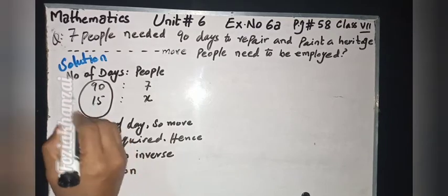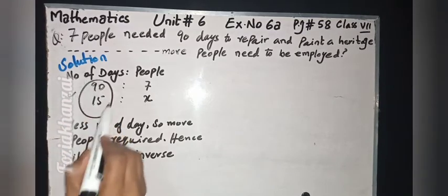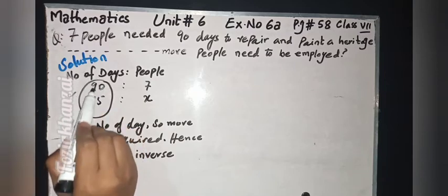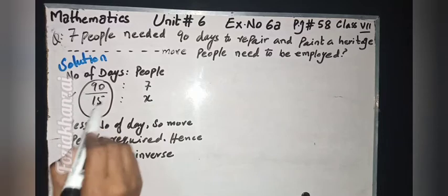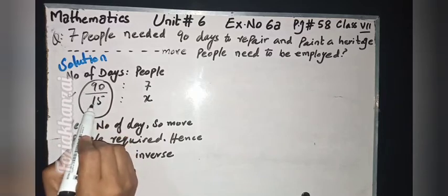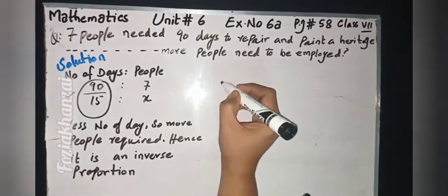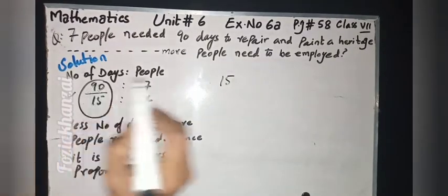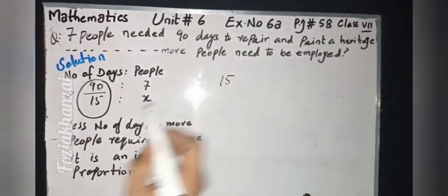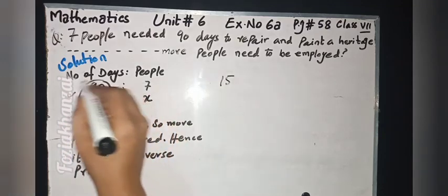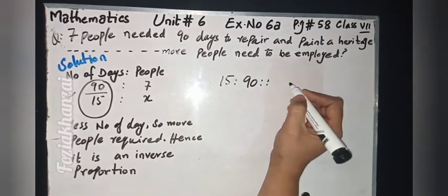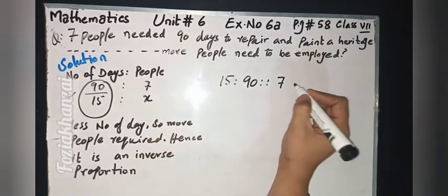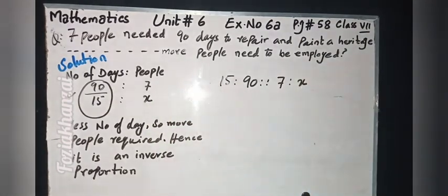In inverse proportion, we reciprocally write only the days part. In fraction form it is 90 upon 15, so reciprocally we first write 15 upon 90. In direct proportion we write 90 is to 15, but in inverse proportion we first write 15 is to 90 — that means we invert this part. So 15 is to 90 proportion.